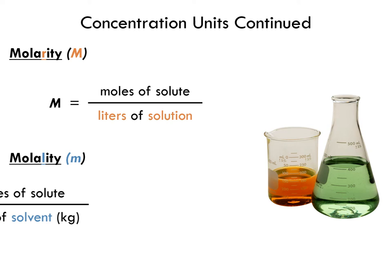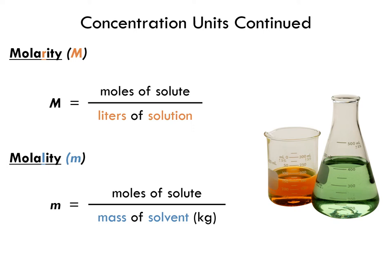The symbol for molality is a small 'm' as opposed to the capital 'M' of molarity, which is an unfortunate choice of symbols. The numerator of molality is still moles of solute. What's different is the denominator: we use mass, not volume, and specifically the mass of the solvent — typically kilograms of water for aqueous solutions. Molarity is used in the vast majority of problems you encounter in chemistry, while molality has a very specific use for colligative properties.